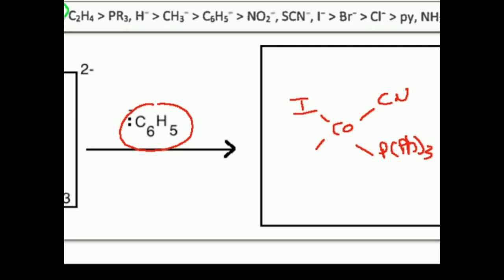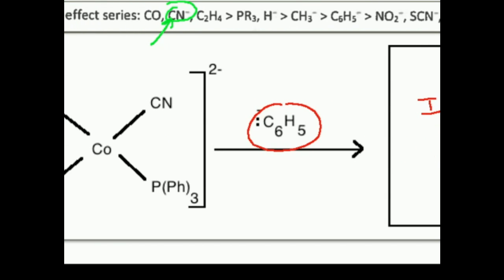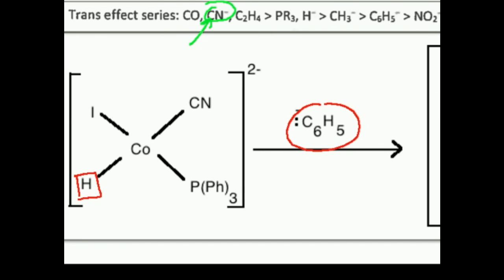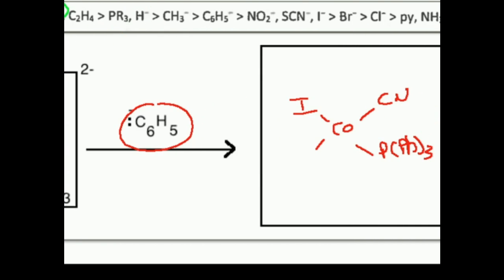And then remember, since CN was the farthest to the left on the trans-effect series, we're going to displace the thing trans to it, the hydride, and the C6H5 is going to add there.